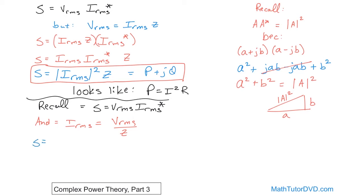S is equal to V_RMS, and I'll open the parentheses and I'll stick this in here, V_RMS over Z, and the whole thing is conjugated. Because don't forget, the conjugate is on the current. We're saying the current is equal to this stuff, so this whole quantity is conjugated. All right, so let's simplify this.